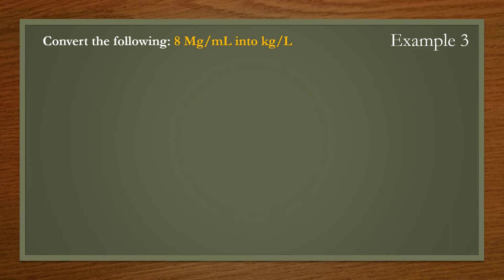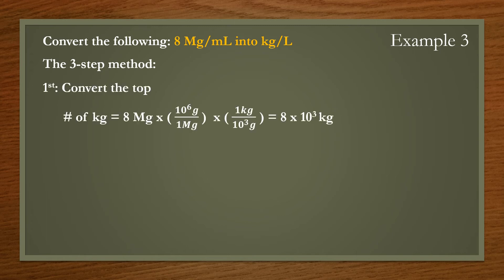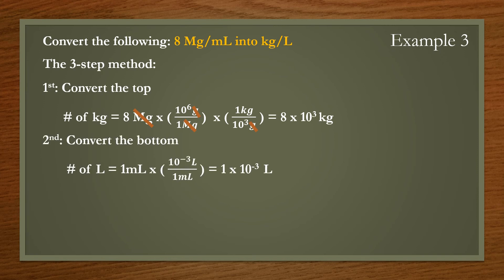Example 3: convert 8 megagrams per milliliter to kilograms per liter. There are two units that need to be converted — the top and the bottom — so let's break it down with a three-step method. First, convert the top from megagrams to kilograms: multiply 8 megagrams by 10 to the power of 6 grams over 1 megagram, canceling out the megagrams, then divide by 10 to the power of 3 grams per kilogram to reach 8 times 10 to the power of 3 kilograms.